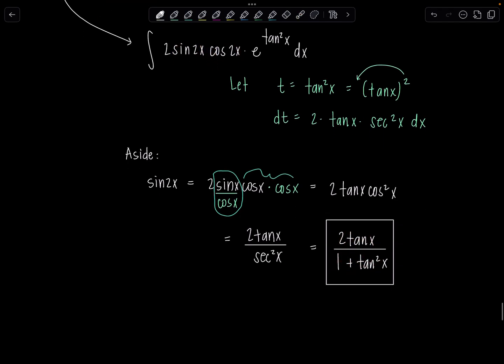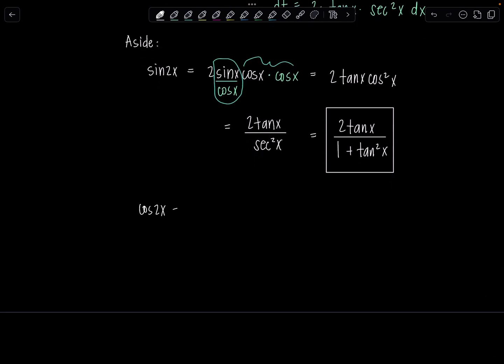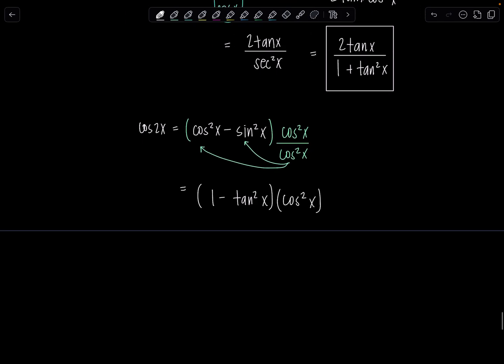Okay, 2 tan x cosine squared x. But then cosine squared x, remember, my goal is to just get everything in terms of tangents or tangent squared if possible. I can rewrite it as secant squared x in the denominator. And then using our pythagorean identity, secant squared x, I can replace with 1 plus tan squared x. Okay, so save that. That's on the back burner. We're going to come in and replace sine 2x with this in just a moment. Let me do the same thing now with cosine 2x.